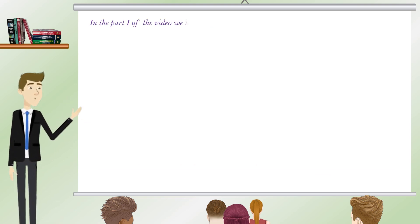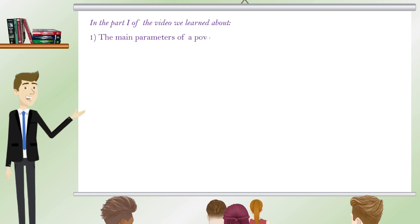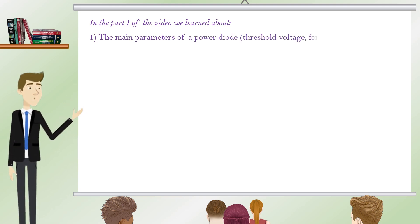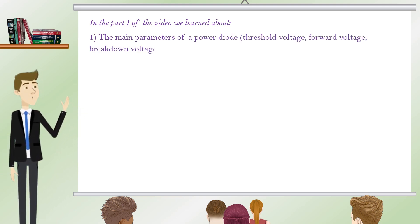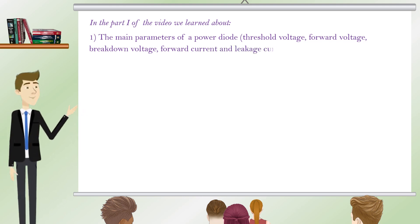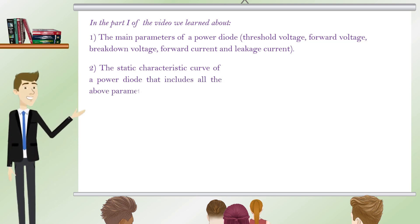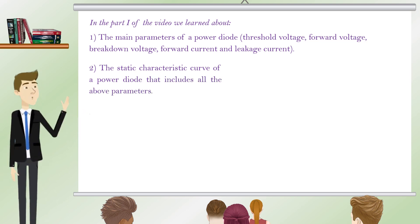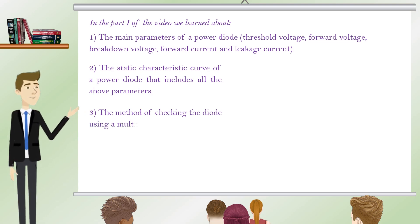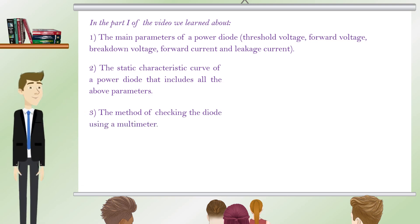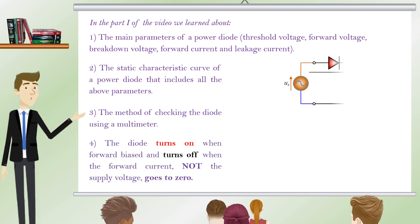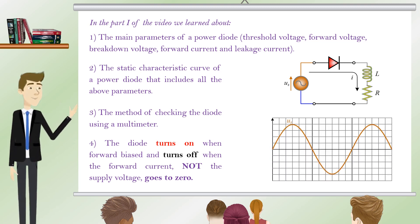In part 1 of the video we learned about: 1, the main parameters of a power diode — threshold voltage, forward voltage, breakdown voltage, forward current, and leakage current; 2, the static characteristic curve of a power diode that includes all the above parameters; 3, the method of checking the diode using a multimeter; and 4, the diode turns on when forward biased and turns off when the forward current — not the supply voltage — goes to zero.